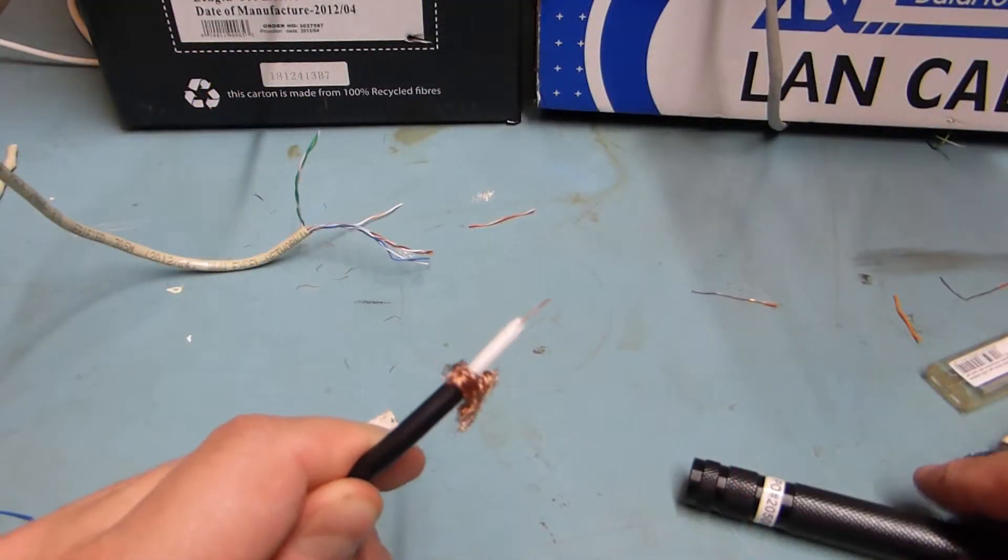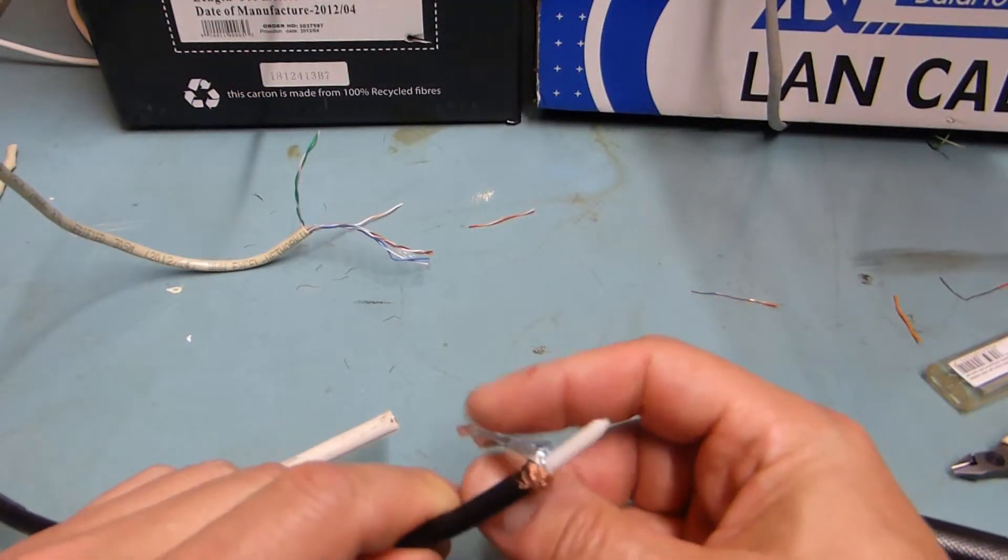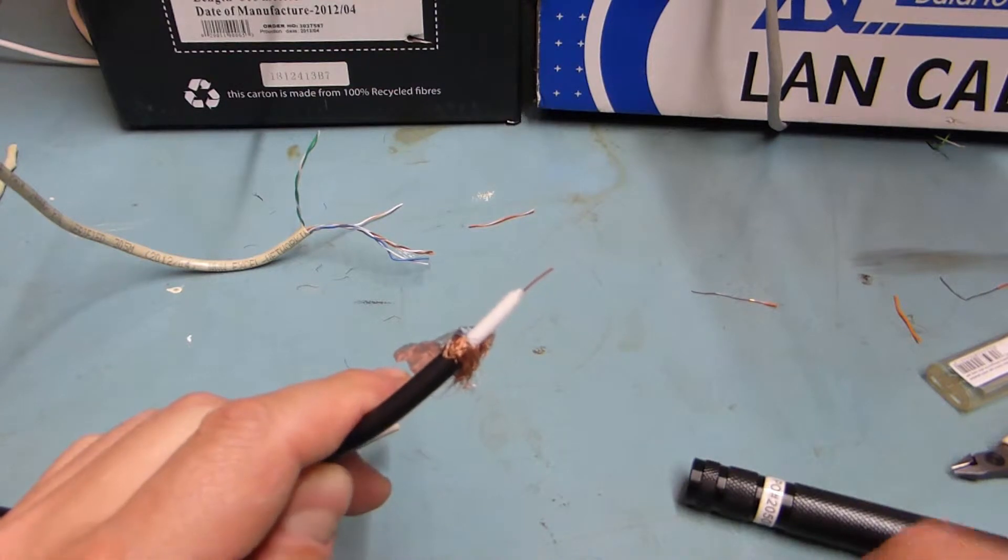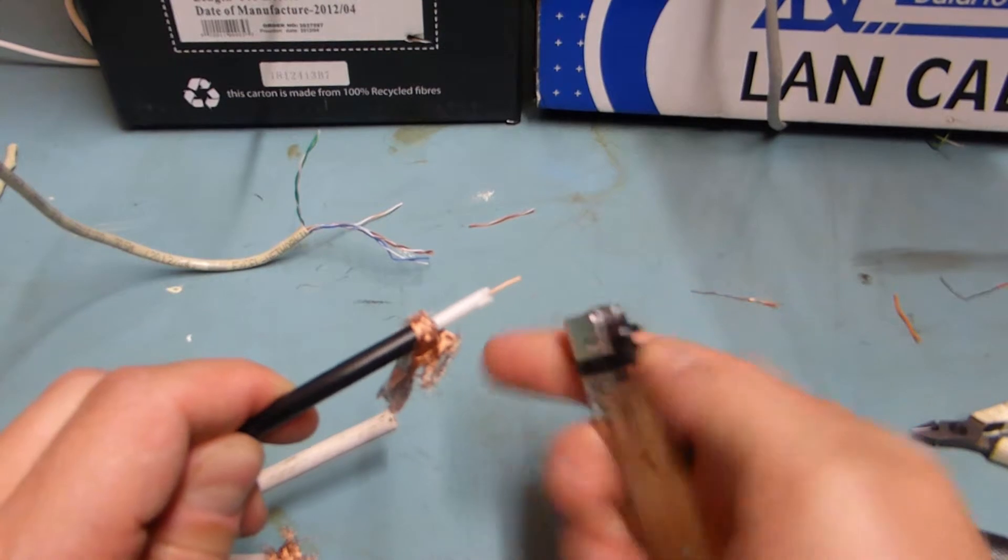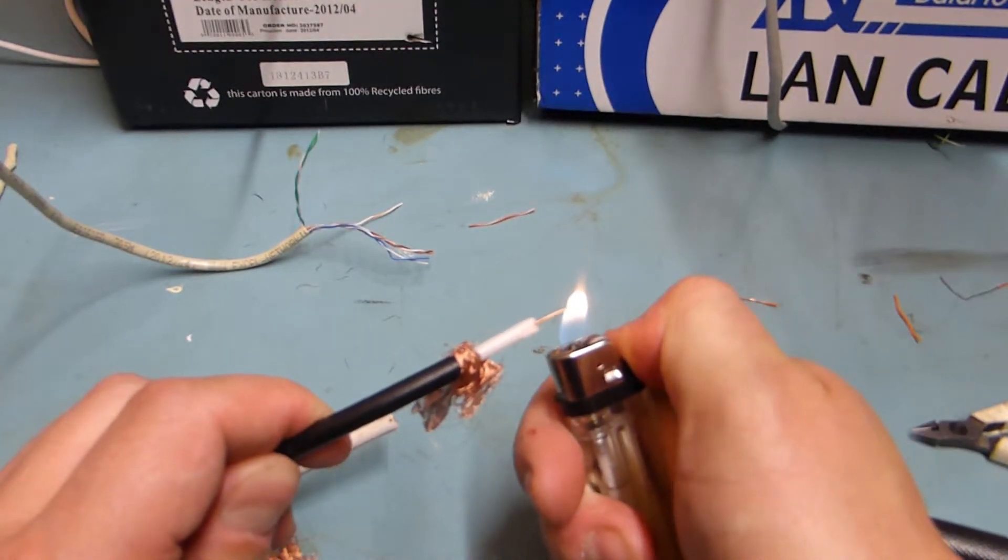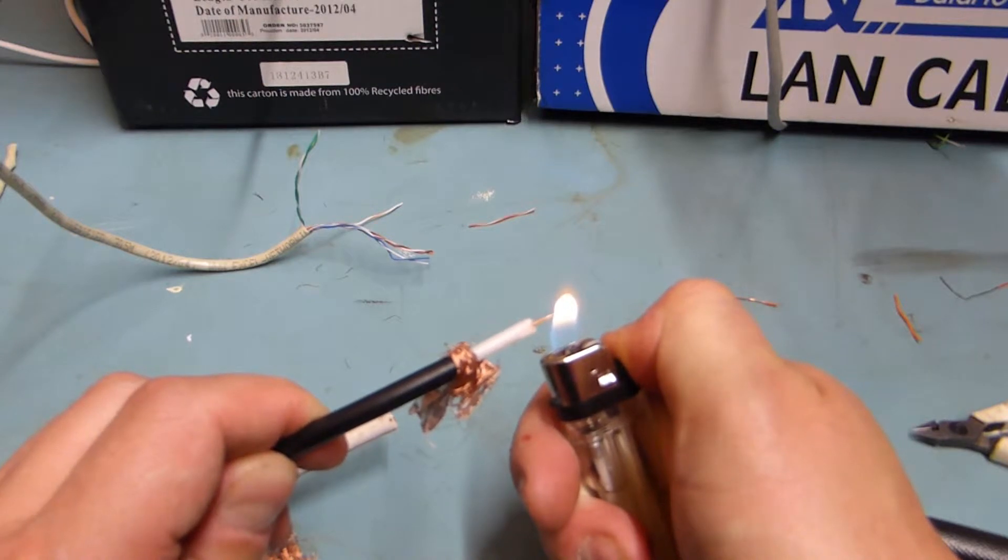Another type of wire to watch out for is something called copper-coated steel. So this one, this is RG59 coax cable and it would pass the cigarette lighter test so you might be thinking, oh great that is copper.